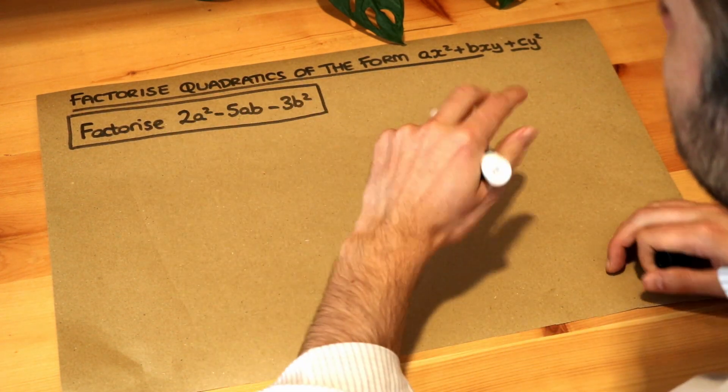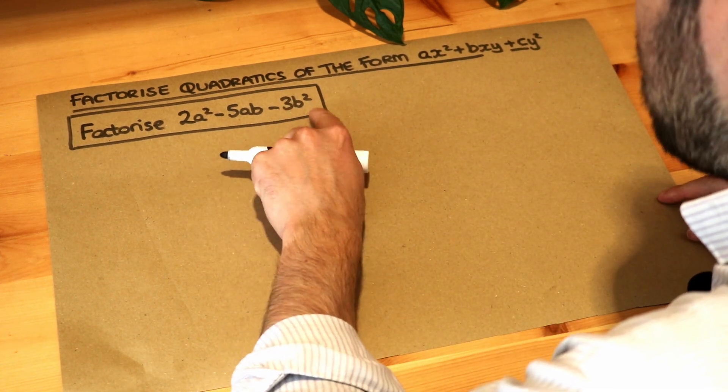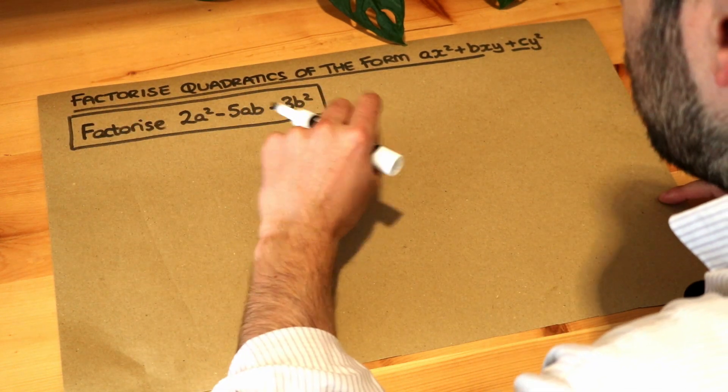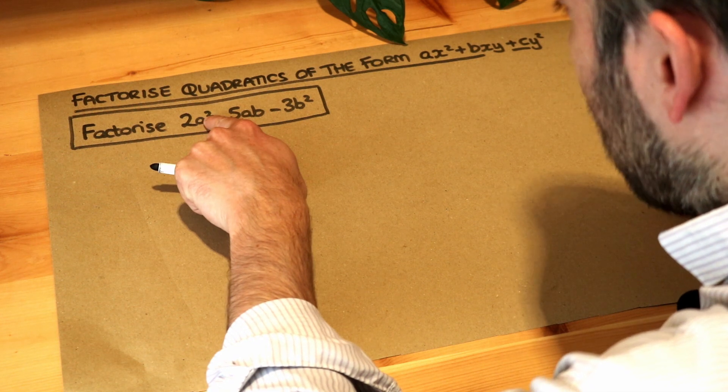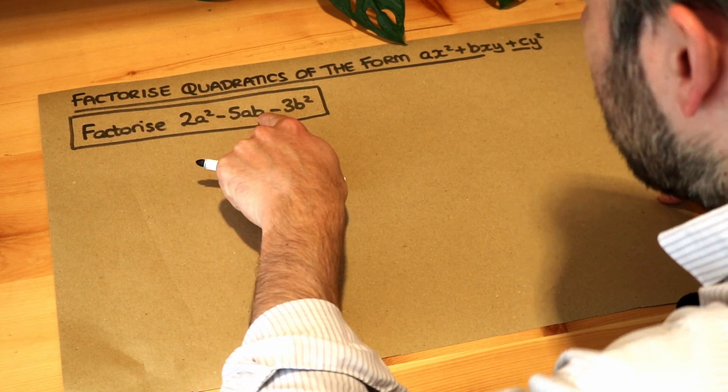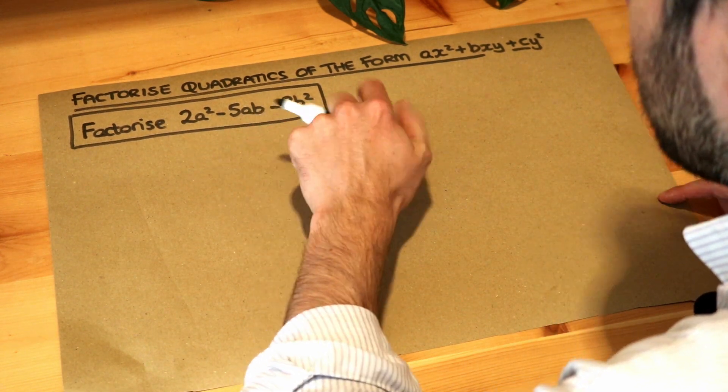Remember, to factorise just means to get it into brackets. Now when you have a mixture of a and b like this, or x and y for example, two different variables - one variable the a, you've got the a squared mixed with b without the squared, and then the other variable the b, you've got the b squared mixed with a without the squared.